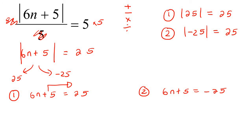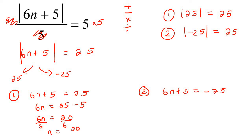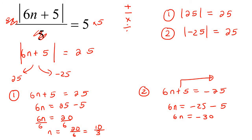Now we solve. For option one: take the 5 to the other side — 6n equals 20, divide by 6, n equals 10 over 3. For the second option: take the 5 to the other side — 6n equals minus 30, divide by 6, n equals negative 5.